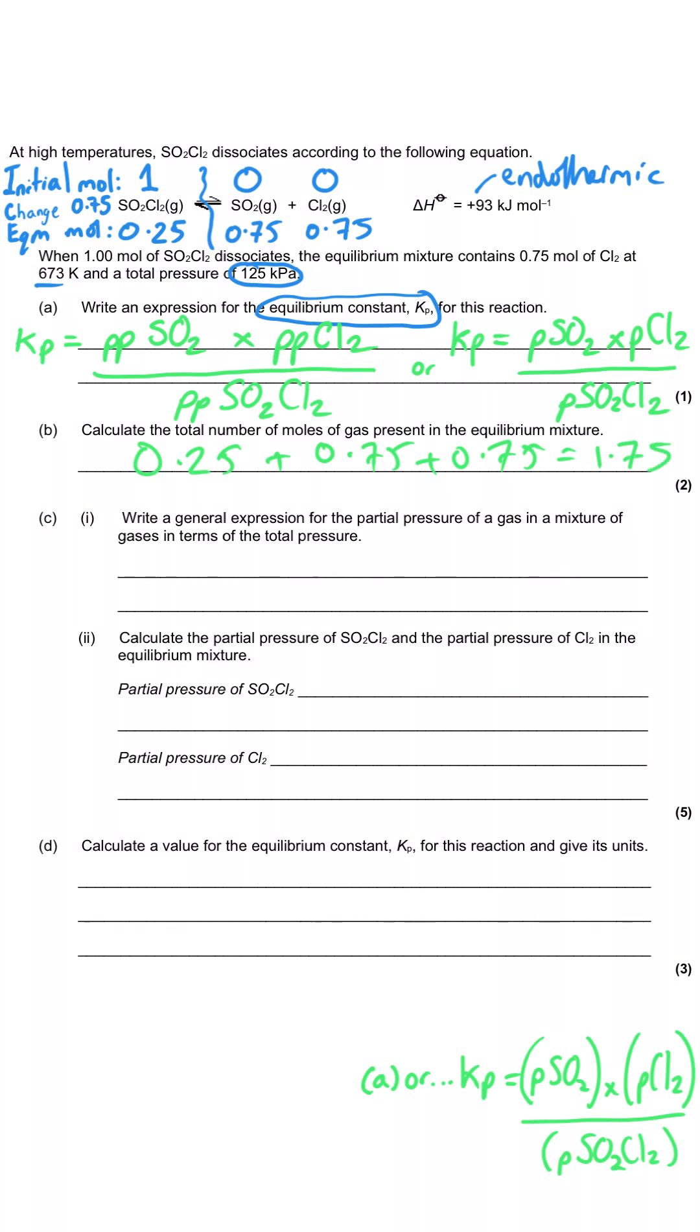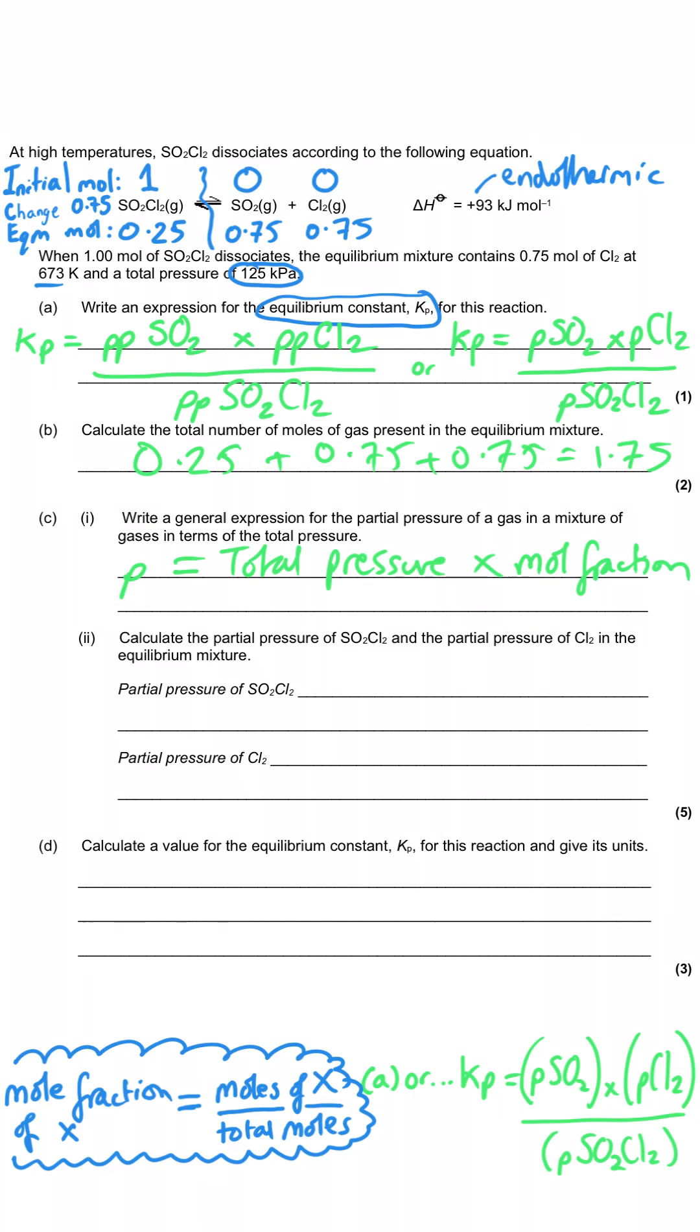Then in part C, they ask us for a general expression for the partial pressure of any gas in a mixture of gases in terms of the total pressure. And so the partial pressure P is equal to the total pressure, which is sometimes given a capital P. I'm just going to write total pressure multiplied by the mole fraction of a particular gas in that mixture. And the mole fraction, I'll write this at the bottom, is equal to the moles of that particular substance divided by the total moles in that mixture. And we're going to need that expression from C part one in the very next question.